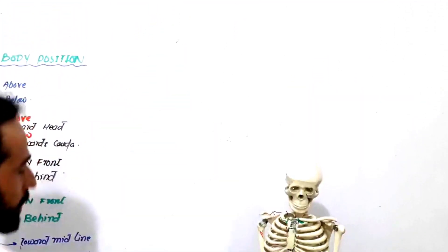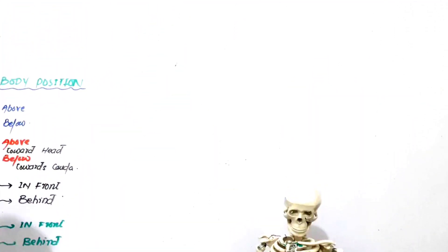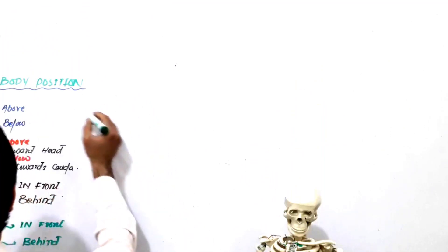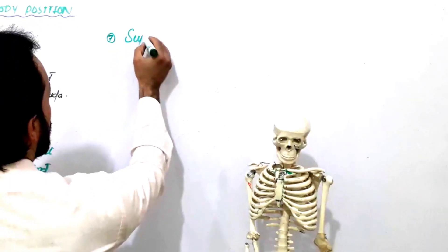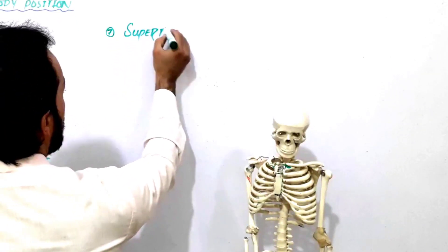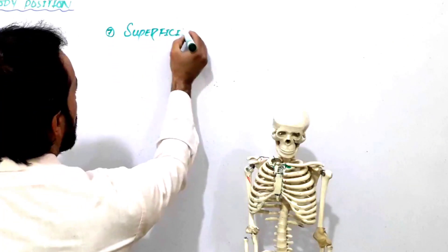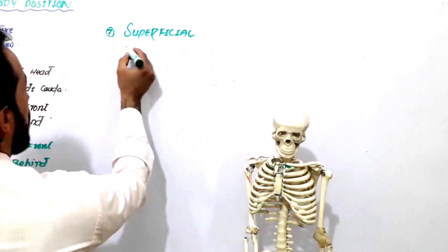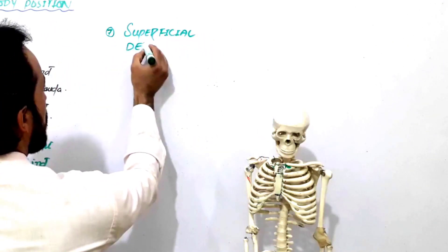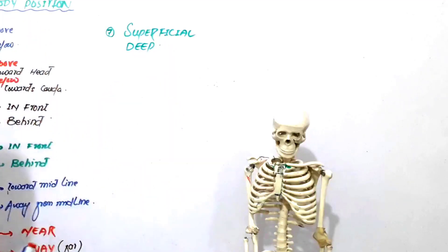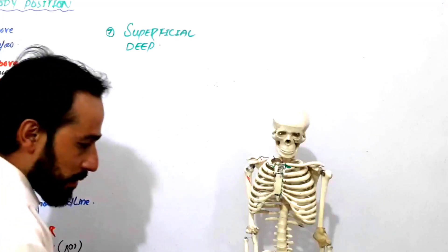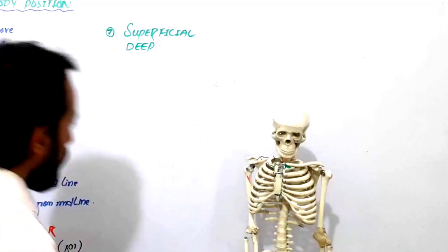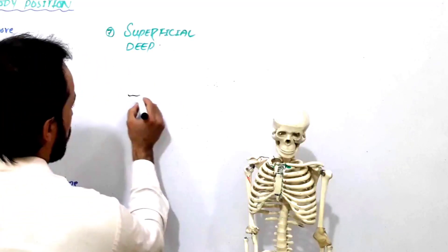The next important term related to body position — the seventh one — is superficial and deep. What do these mean? Look carefully.